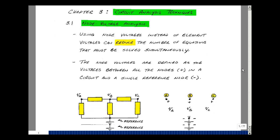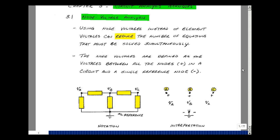The node voltages of a circuit are defined as the voltages between all of the nodes and a single reference point.